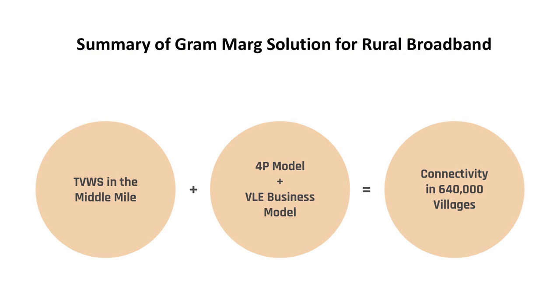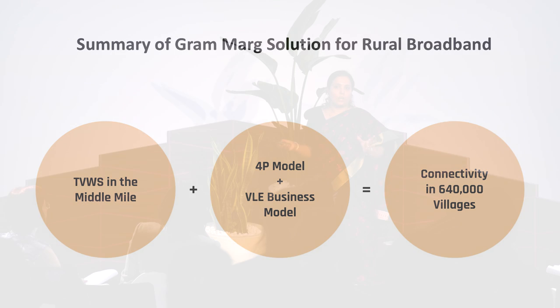In summary, Grammarg harnesses TV white space in the middle mile. It uses the 4P model — public-private-panchayat partnership — with a sustainable VLE business model, and we propose it for connecting 640,000 villages in India that are currently unconnected. Thank you.